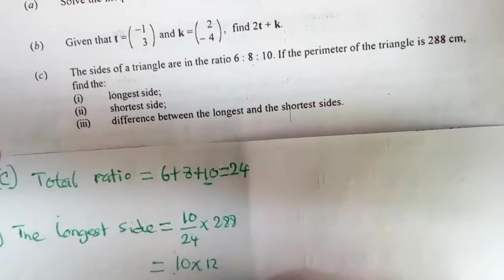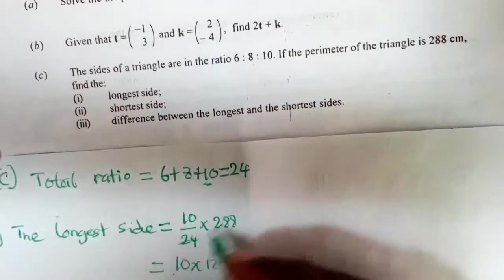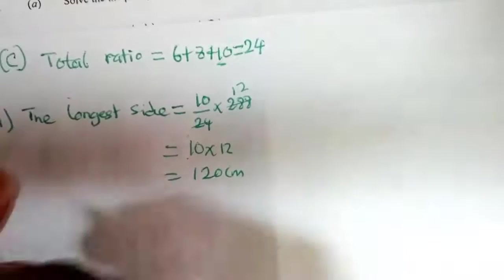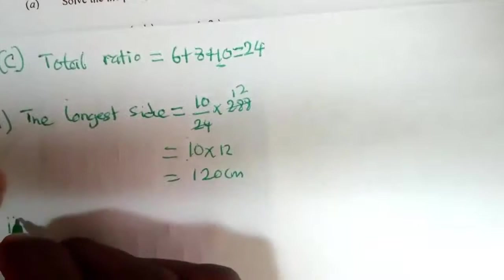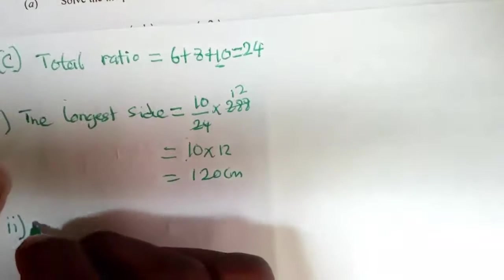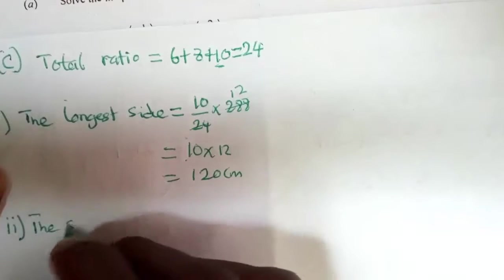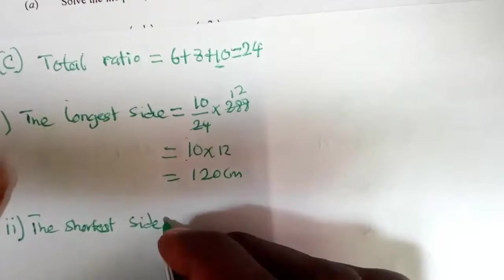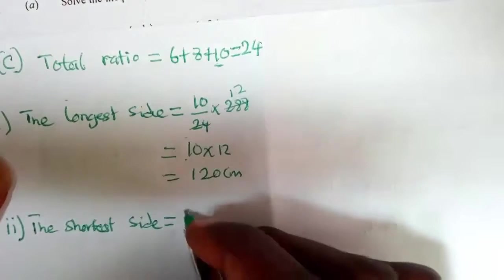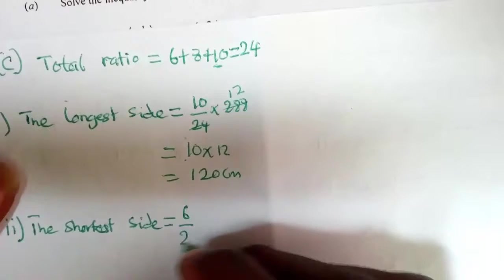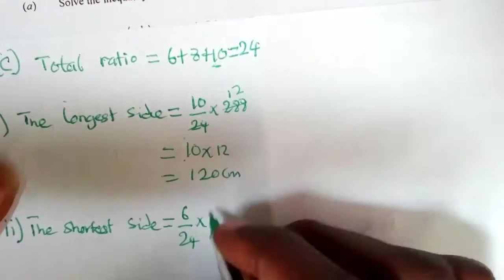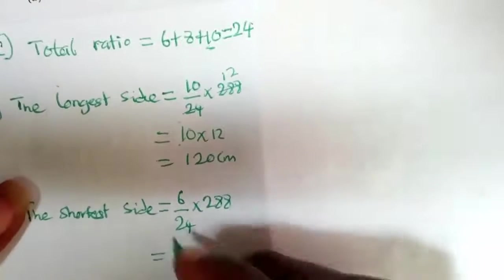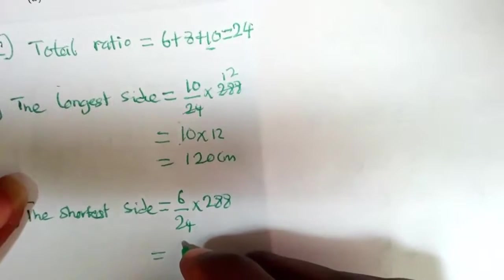This is the same as 10 times 12, giving us 120 cm. For part ii, the shortest side corresponds to the ratio 6 over 24 times 288, which equals 6 times 12, giving us 72 centimeters.